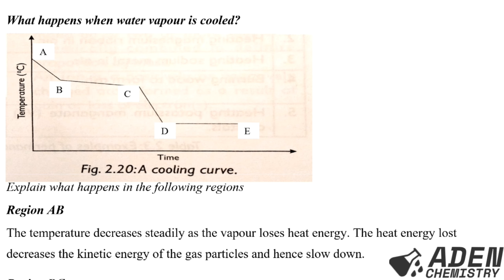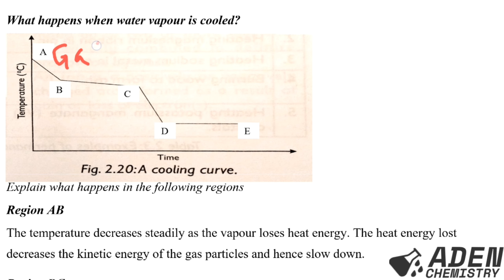We are supposed to explain the following regions: region AB, region BC, region CD, and also region DE. For region AB, we are having the gaseous phase — the gaseous state.